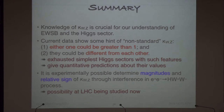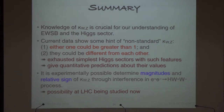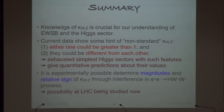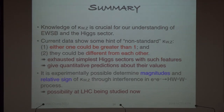In summary: knowledge about kappa_W and kappa_Z is very important to understand the Higgs sector. Inspired by current LHC data central values — which show possible non-standard behavior where kappa_W and kappa_Z could be greater than one and significantly different from each other — we exhausted the simplest models satisfying both features, giving quantitative predictions. In the second part, I showed how at the ILC we can experimentally determine both the magnitude and relative sign of kappa_W and kappa_Z. We are also studying the analogous process at the LHC.